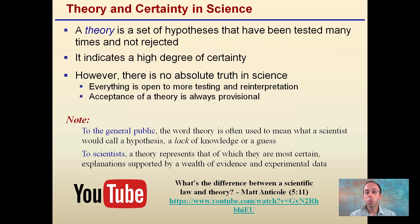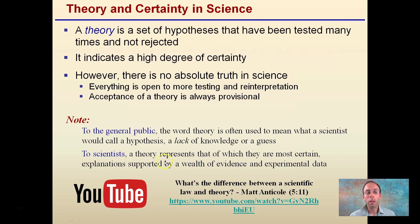There's no absolute truth in science — everything is open to more testing and reinterpretation. Acceptance of a theory is always provisional. To the general public, when we use the word theory, it's often used to mean what a scientist would call a hypothesis: a lack of knowledge or a guess. However, to scientists, a theory represents that of which they are most certain — explanations supported by a wealth of evidence and experimental data.